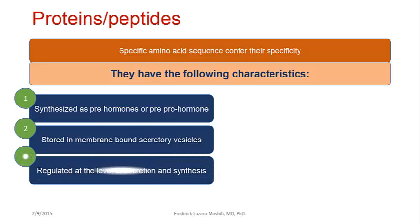Characteristic three: they are regulated at the level of secretion and synthesis. Basically, an inactive hormone is produced and then activated, but it is not immediately released. Instead, it is stored. When a stimulus comes, it is then released. This is why it is controlled at the level of both secretion and synthesis.